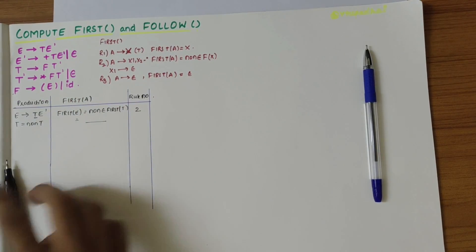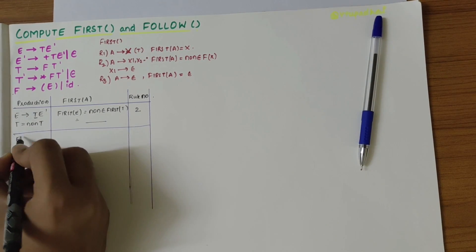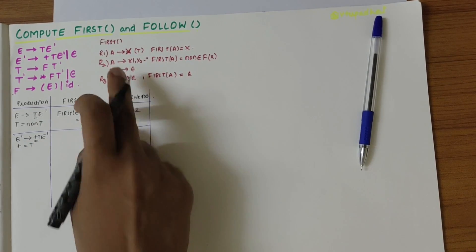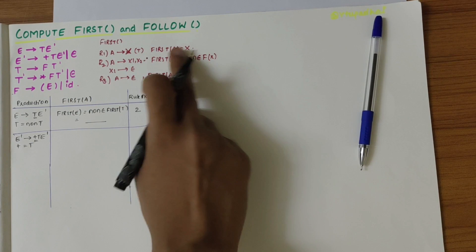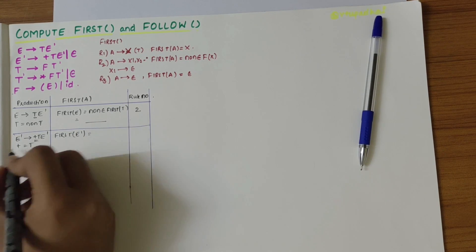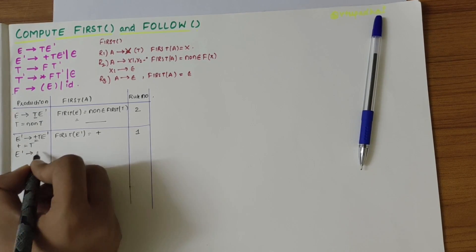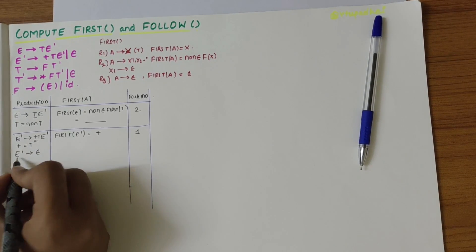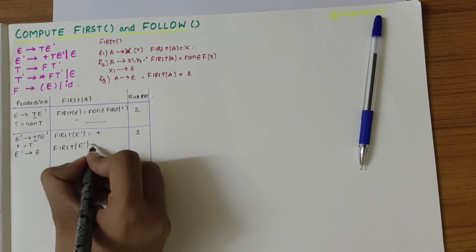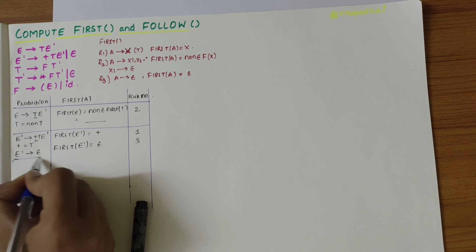Moving on to the second production, E' derives +TE'. Here '+' is a terminal, so first of E' includes '+'. Also when E' derives epsilon, we use rule three: first of E' includes epsilon. So we have solved for the second production.